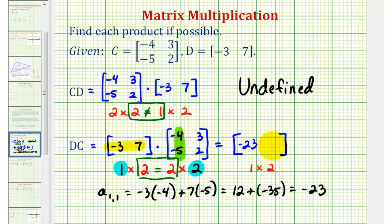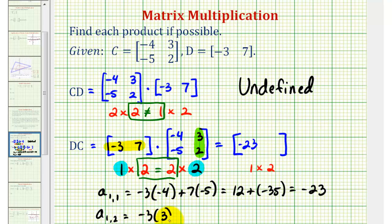Now we're left to find the element in row one, column two — that is a-sub-one-comma-two — which means we find the product of row one from the first matrix and column two from the second matrix. So we have negative three times positive three, plus positive seven times positive two, giving us negative nine plus 14, which is equal to positive five.